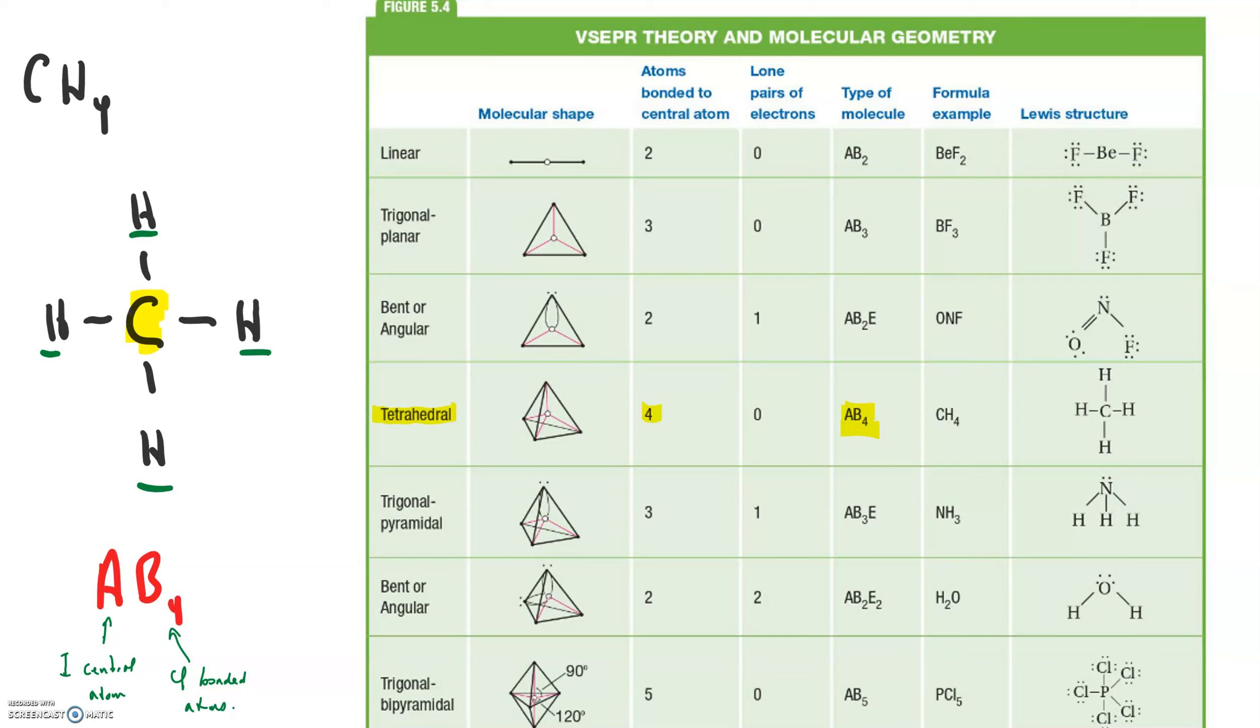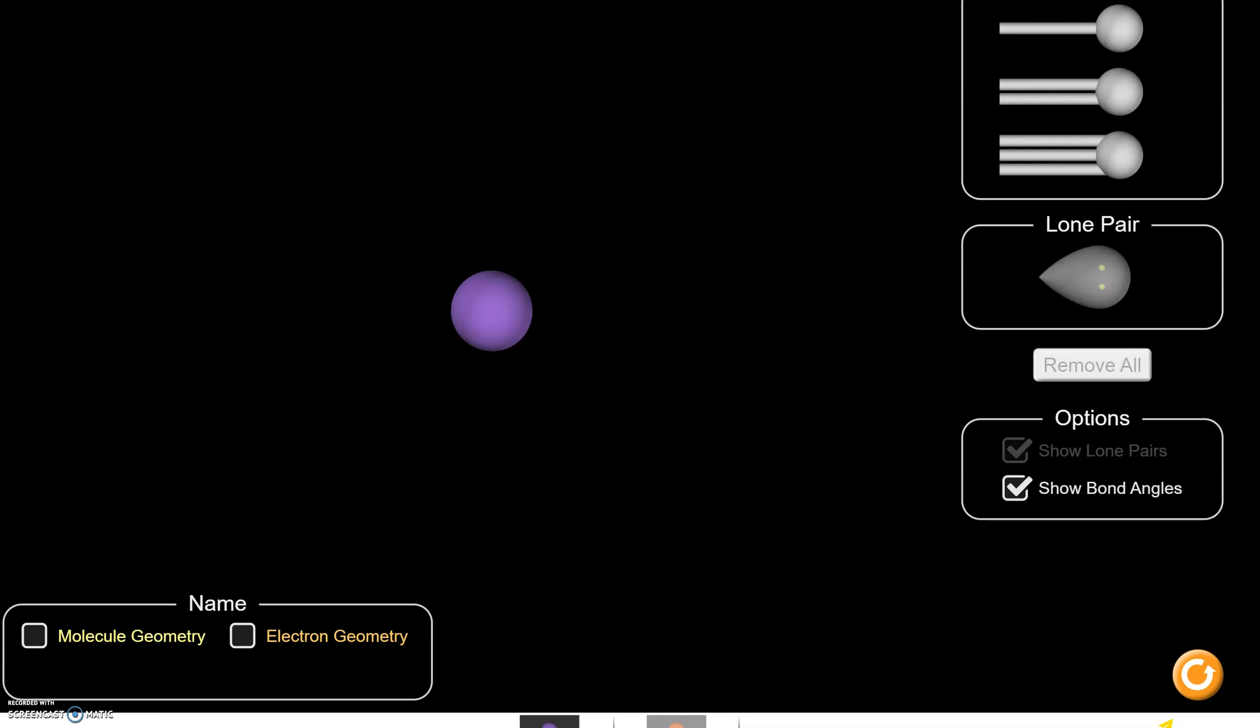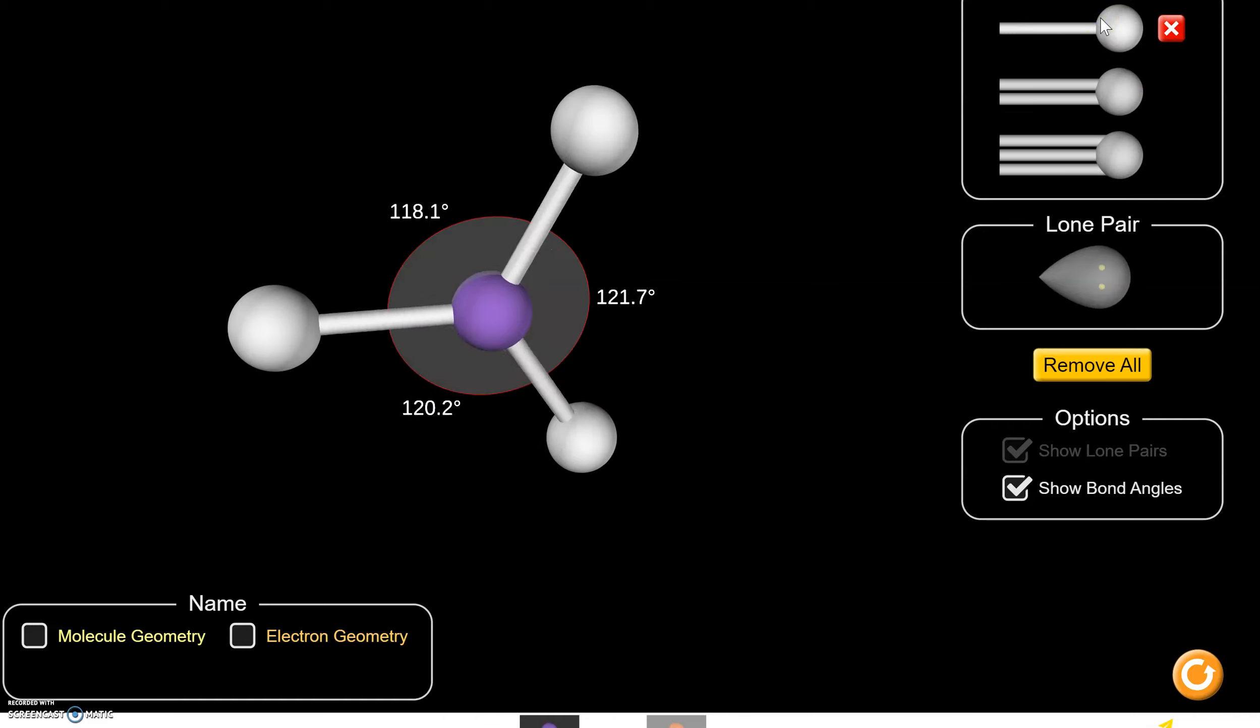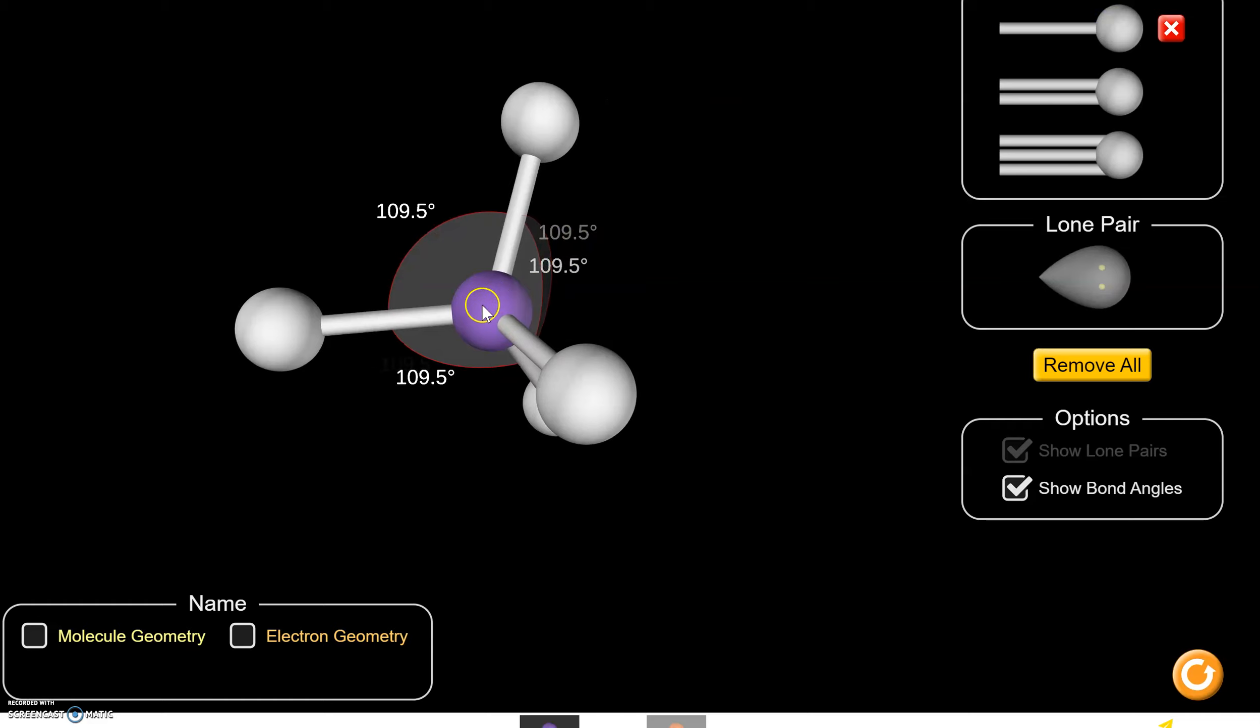But if you use this three-dimensional generator, this guy here, it does the same thing. So we've got one central atom, and we're going to bond one, two, three, four atoms to the central atom.